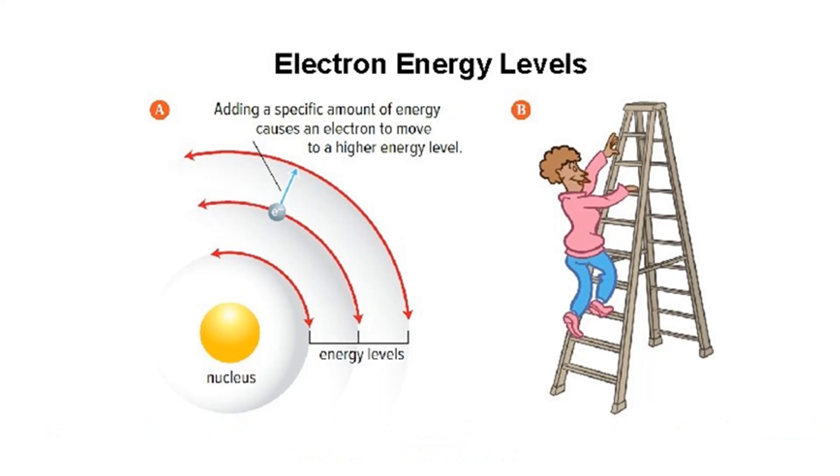In general, the higher an electron is on the energy level, the further it is in space from the nucleus. The amount of energy gained or lost by an electron is not always the same. Unlike the rungs of a ladder, the energy levels in an atom are not equally spaced. In fact, the energy levels become more closely spaced the farther they are from the nucleus.